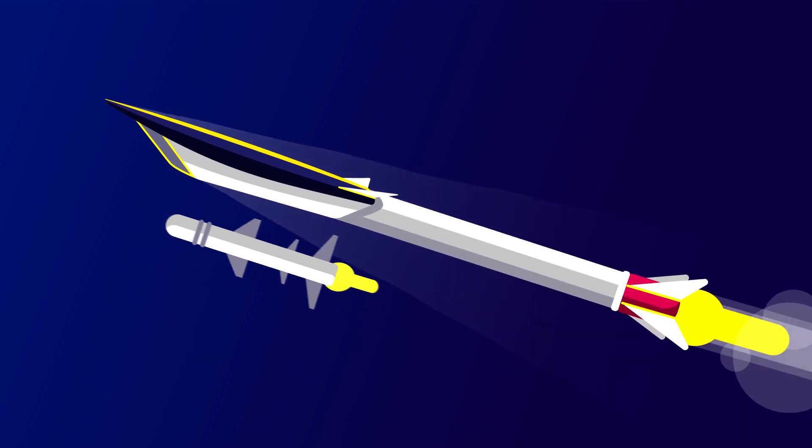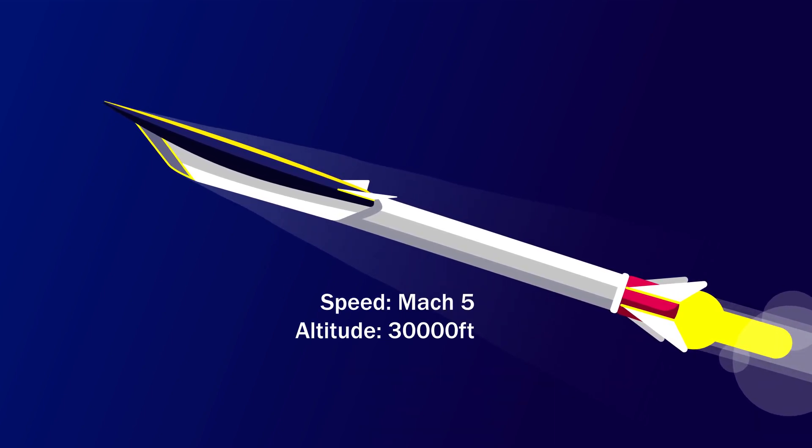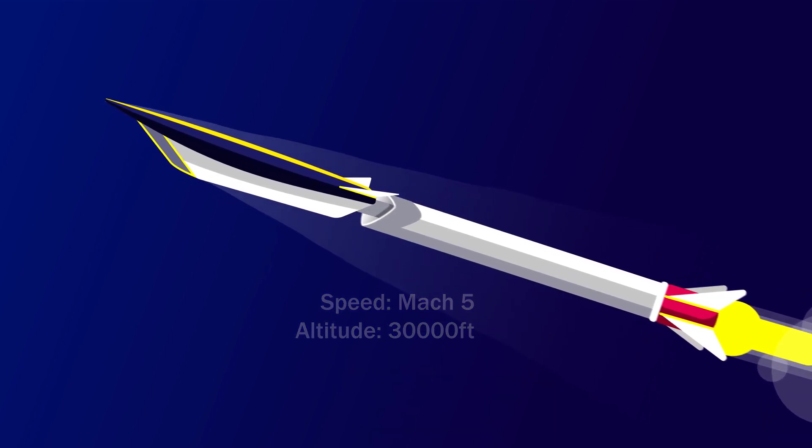This is mounted on solid rocket boosters, which take it to the required speed of Mach 5 and an altitude of over 30,000 feet. The cruise vehicle is then ejected, and the scramjet engine is ignited automatically.